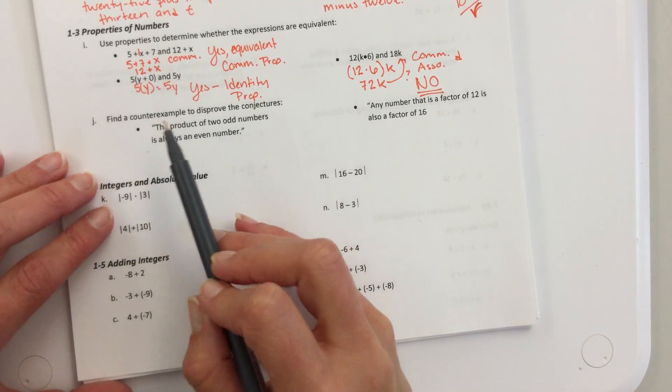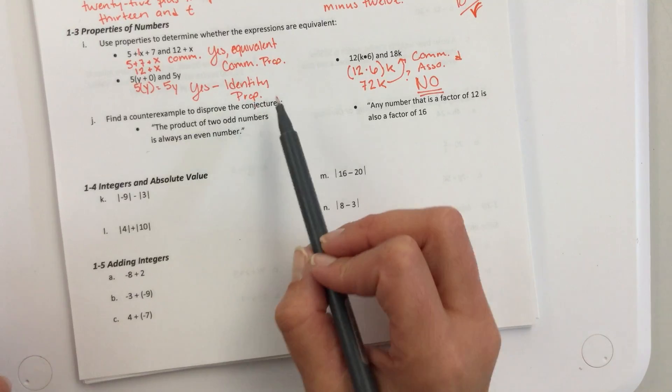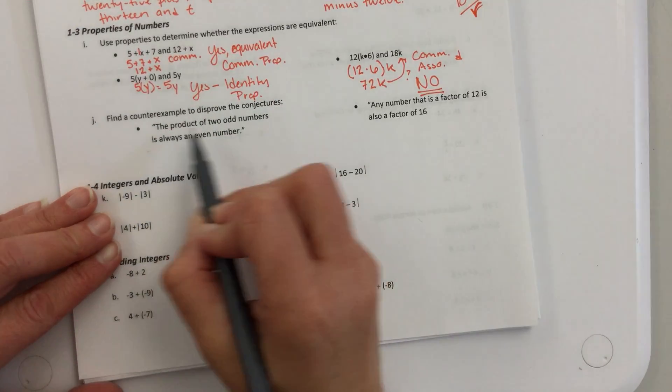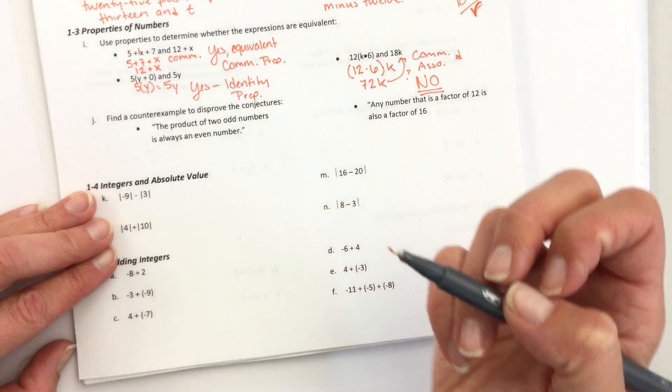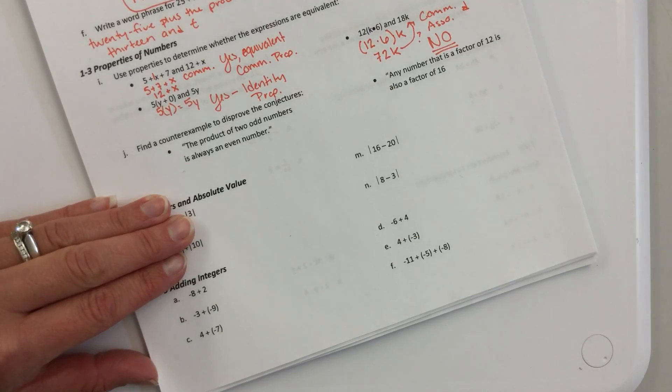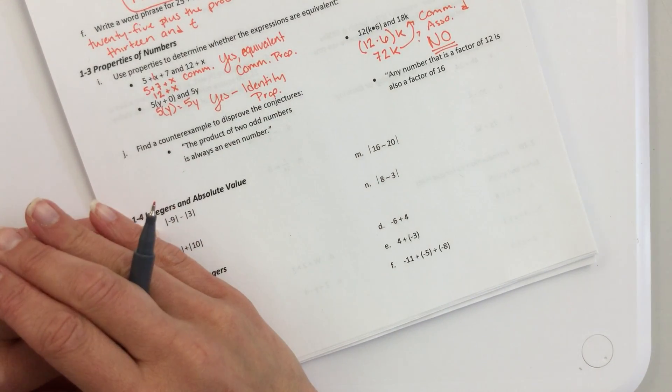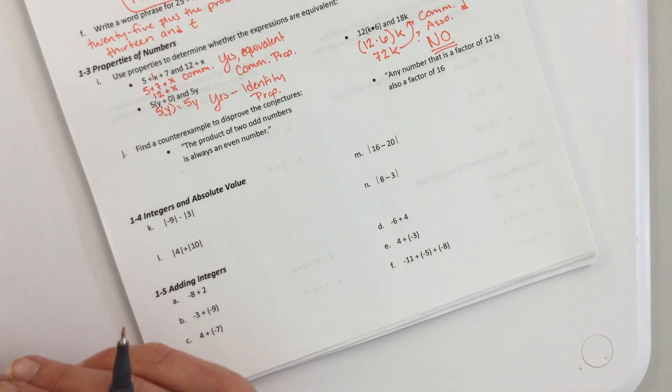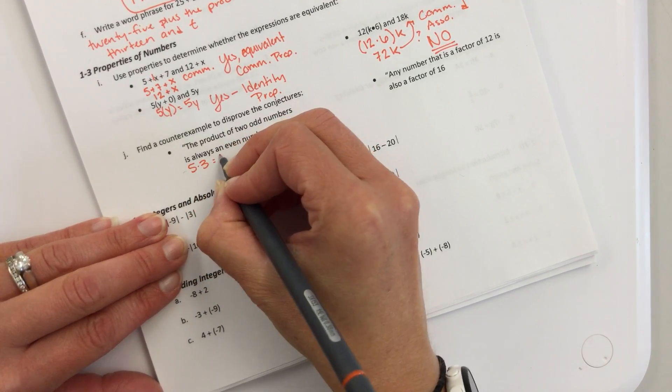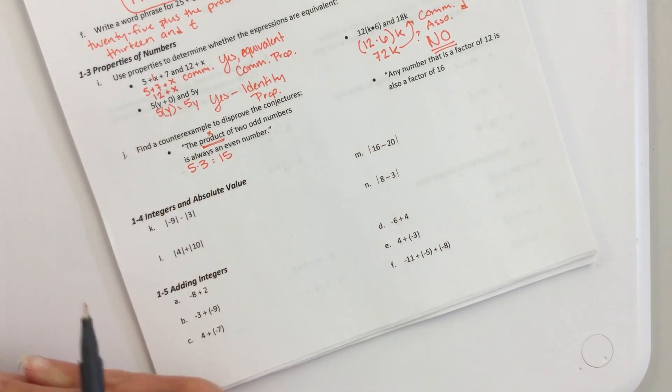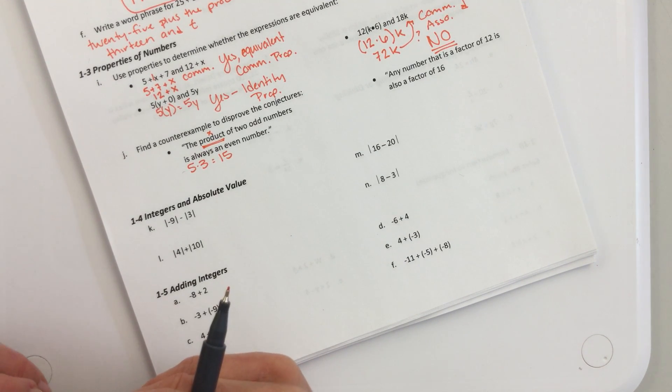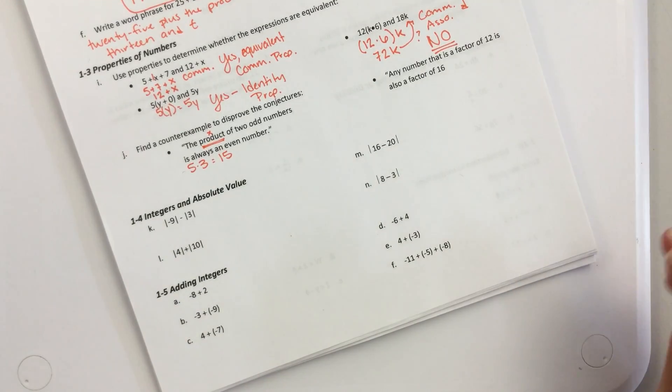Okay, so, a counterexample is a statement that's believed to be true, or a conjecture is a statement believed to be true. A counterexample disproves it, okay? So, the product of two odd numbers is always an even number. Do you think it's true? Well, let's test it out. Give me two odd numbers that multiply to an even number. Five and three. Five and three. What does five and three equal? Fifteen. Oh, but this did disprove it, because it's not even. Sorry. I was thinking that we had to find an even, an odd product.